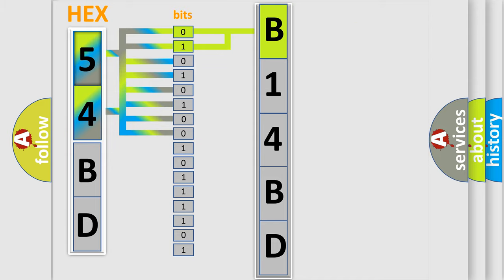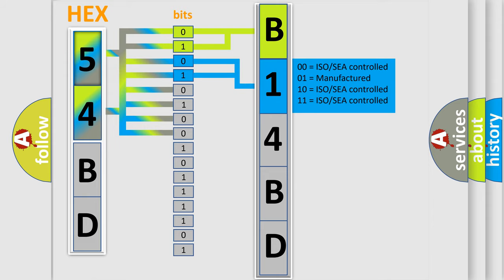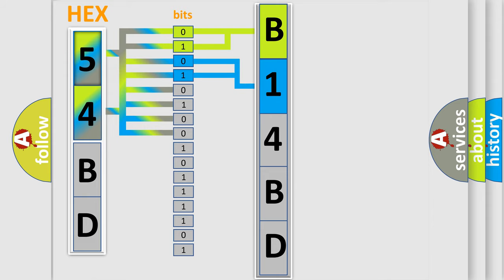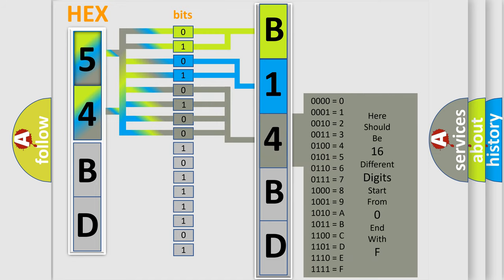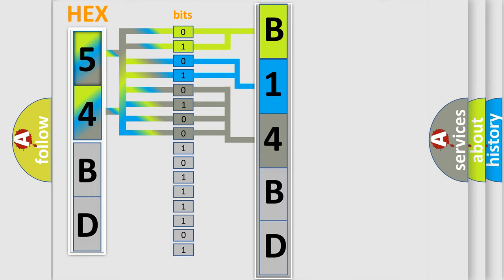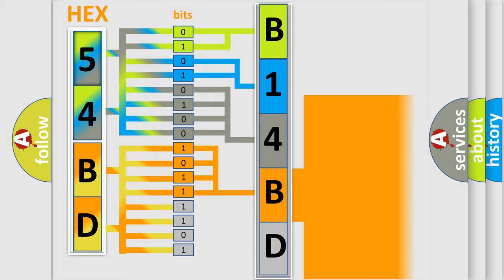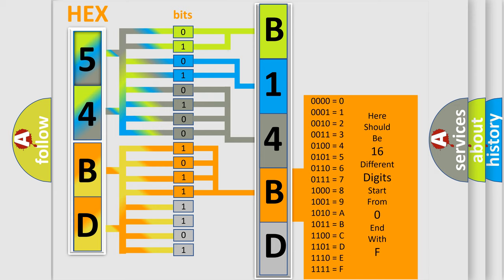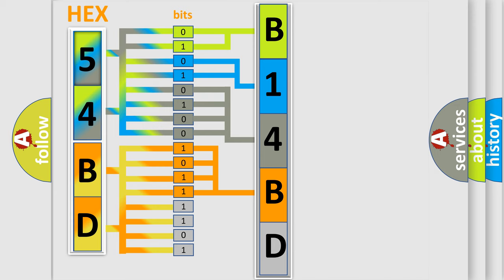The next two bits determine the second character. The last bits of the first byte define the third character of the code. The second byte is composed of a combination of eight bits. The first four bits determine the fourth character of the code, and the combination of the last four bits defines the fifth character. A single byte conceals 256 possible combinations.